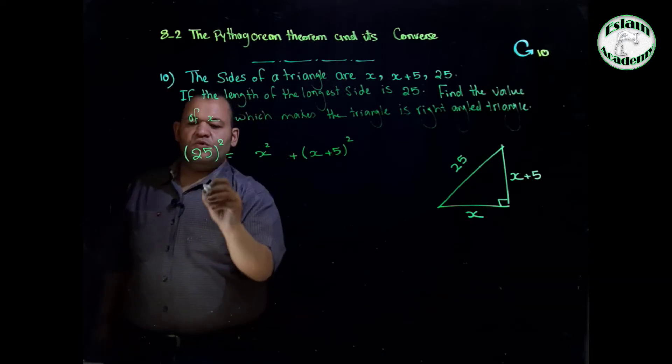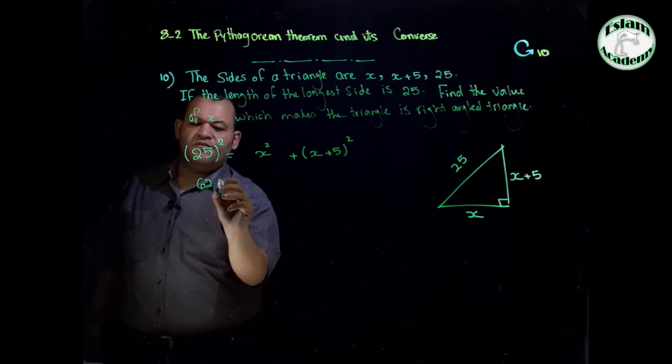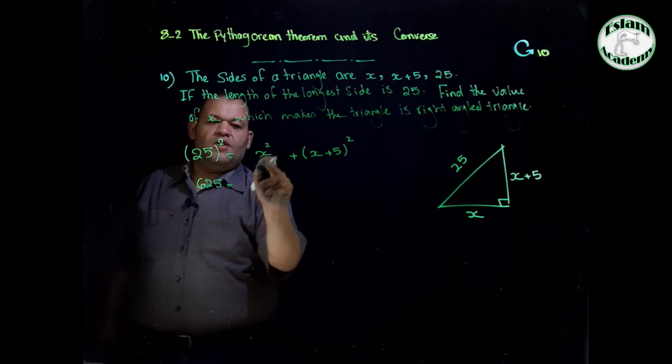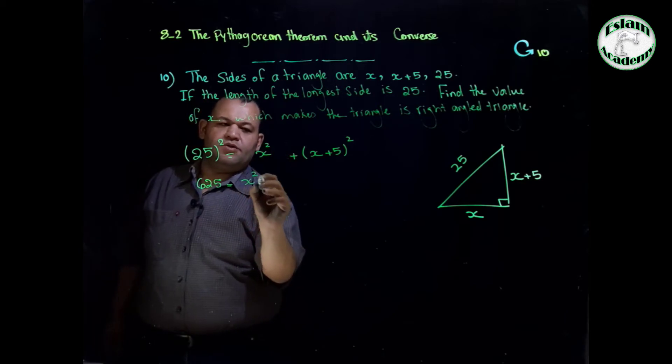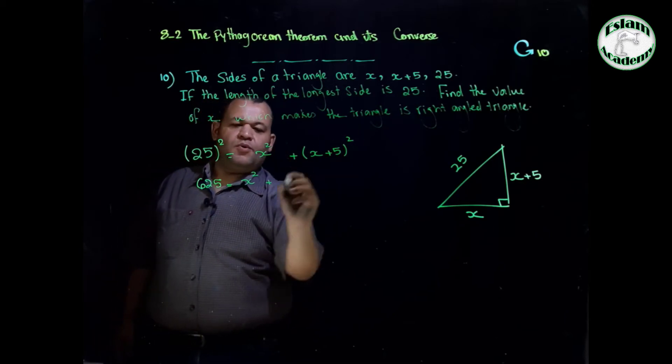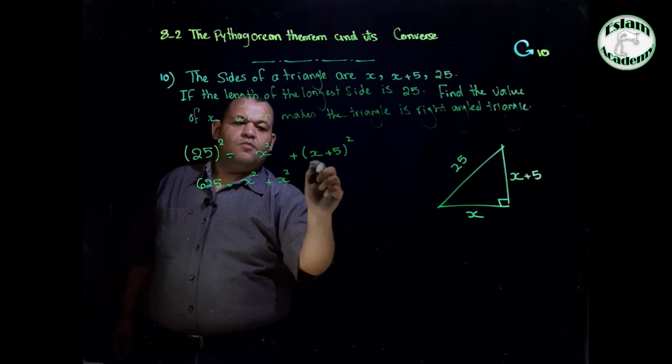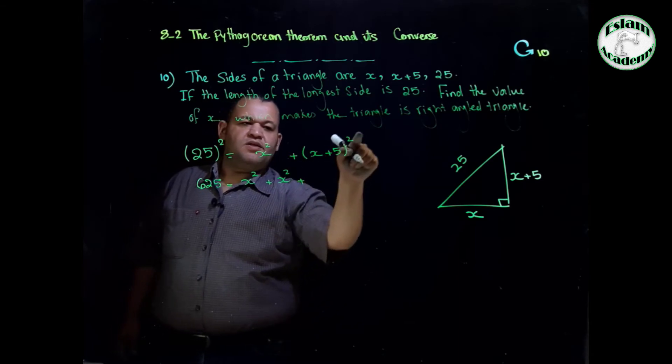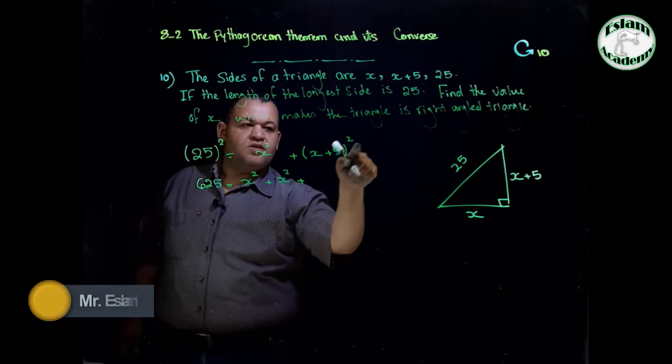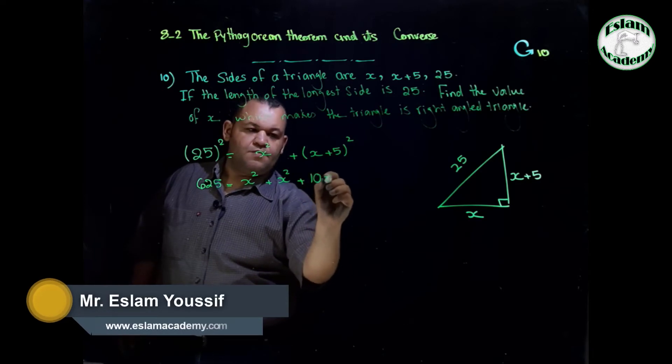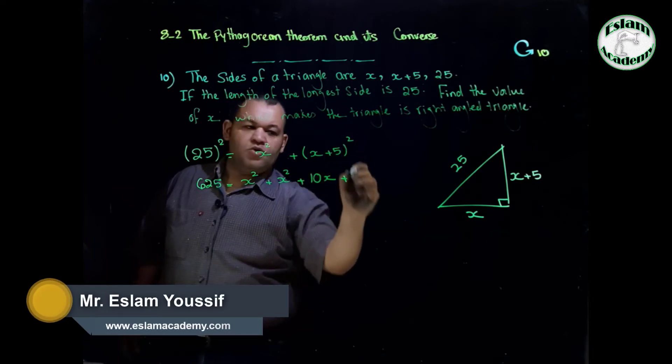So 25 to the power 2 equals 625. And this will be x squared plus x squared plus the first times second times 2: x times 5 equals 5x times 2 equals 10x plus 5 squared which is 25.